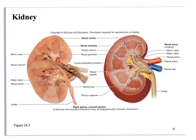The renal sinus contains the minor and major calyxes and the renal pelvis. In your kidney dissection in lab, when you cut it in half, all the yellow latex was where urine would be collected — that's the renal sinus. The renal artery comes in and breaks down into numerous vessels, eventually getting to the nephron. Blood comes in from the renal artery, separates and branches out to the nephrons.